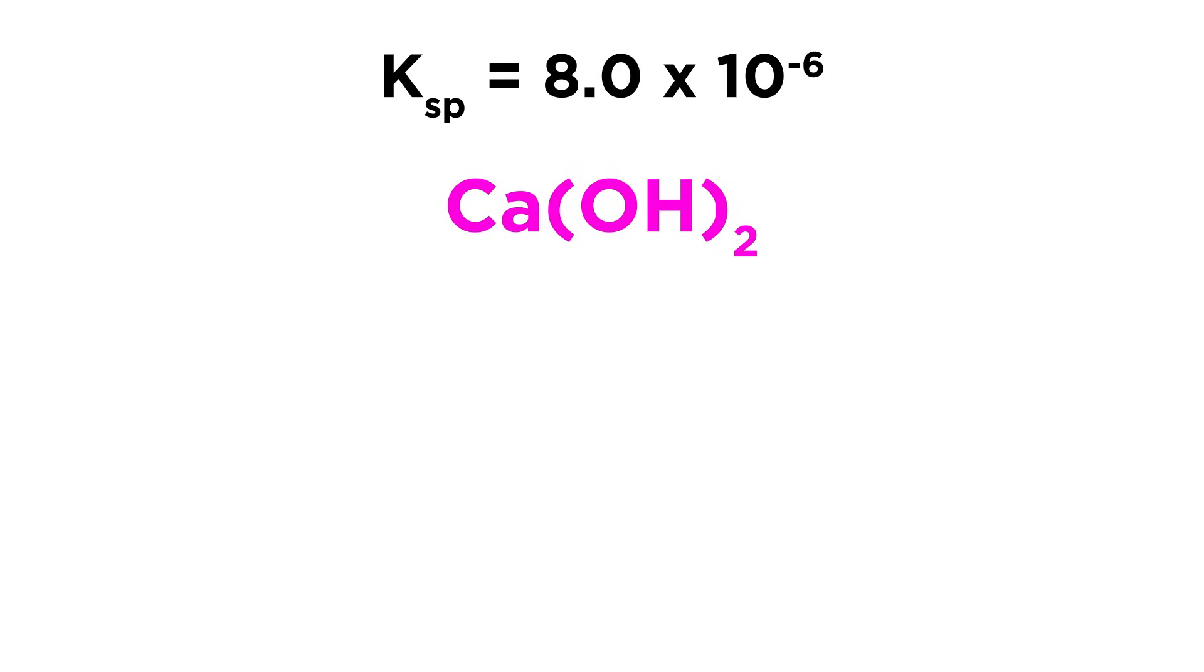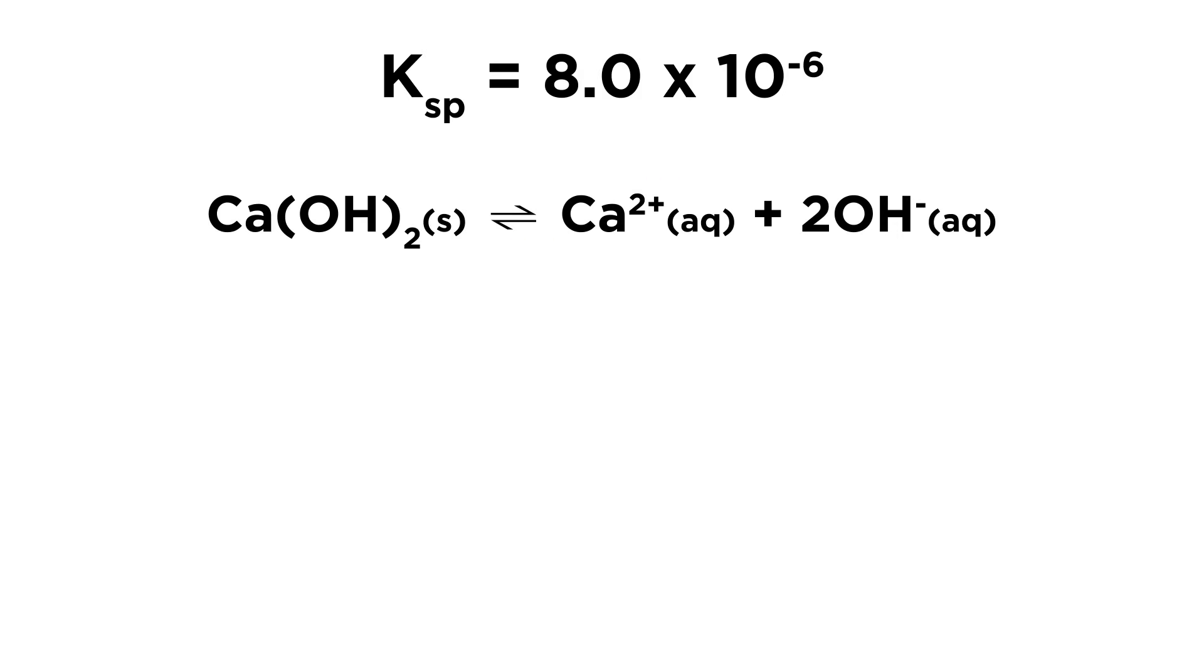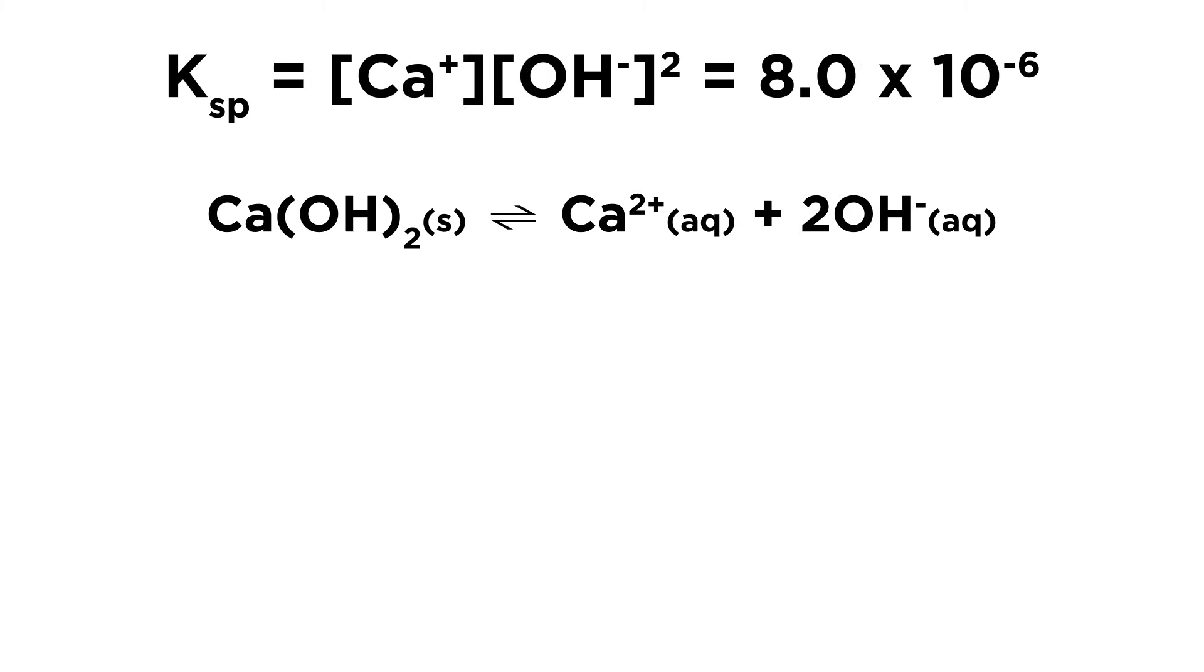Let's look at calcium hydroxide, which has a Ksp of 8.0 times 10 to the negative 6. Say we place this in aqueous solution, which will produce some calcium ions and hydroxide ions. Again, let's write the Ksp expression, noticing that the hydroxide concentration must be squared, as there will be two hydroxide ions for every formula unit of calcium hydroxide that dissolves.